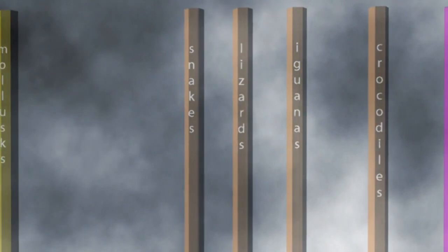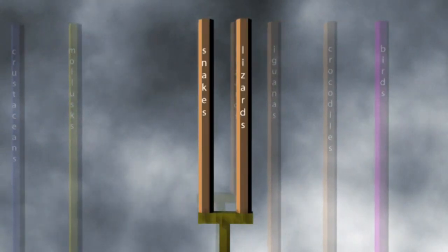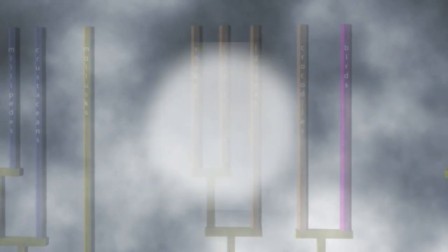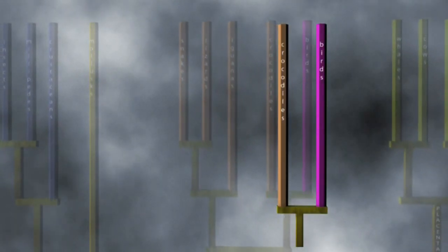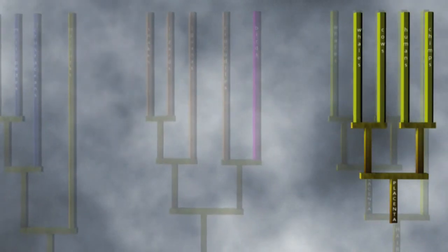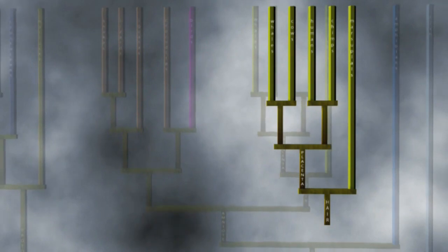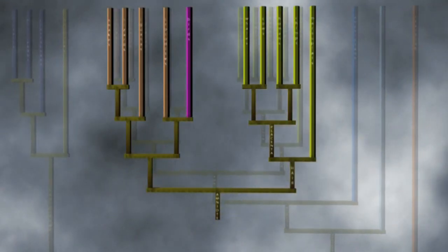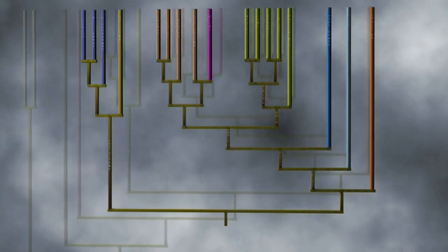Species are essentially never found that combine characteristics of different groupings. For example, snakes and lizards are never found with feathers — only birds have feathers. Birds and crocodiles are never found with differentiated teeth. Only non-marsupial mammals have a placenta; birds and mollusks are never found with placenta. Only mammals have hair and mammary glands. Amniotic eggs are never found in fish or arthropods. The consistency of nested hierarchies is another success for common descent.